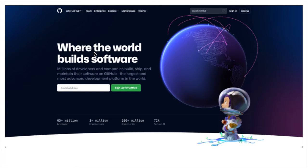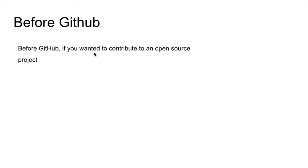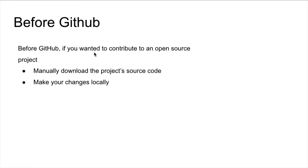But how were things done before GitHub? Before GitHub existed, if you wanted to contribute to an open source project — a free project that anybody can contribute to — the process was super complicated. First, you had to manually download the project source code onto your own computer. Then you make the changes locally — you're still doing Git. You're still working on your local computer. And then after that, you create a list of changes, which they call a patch.